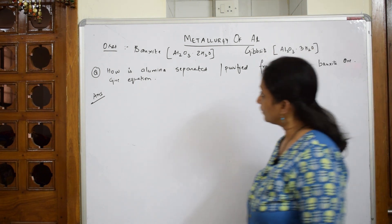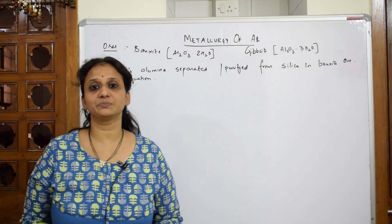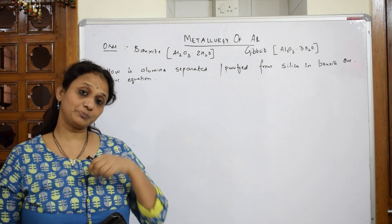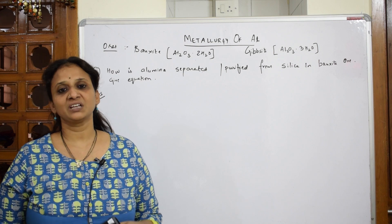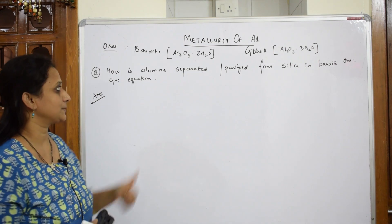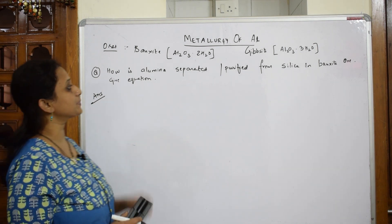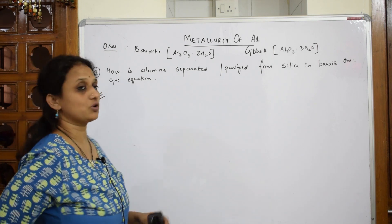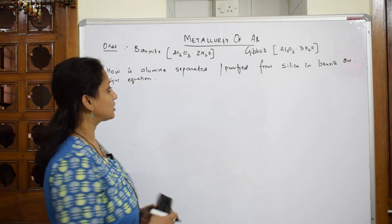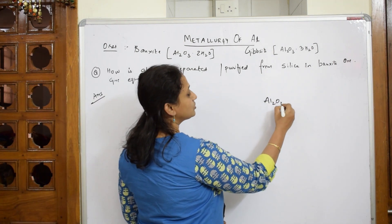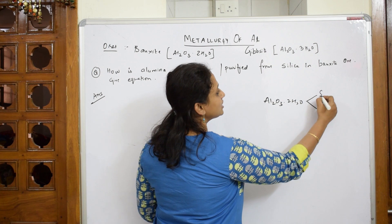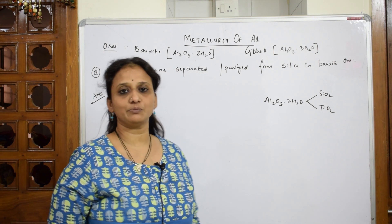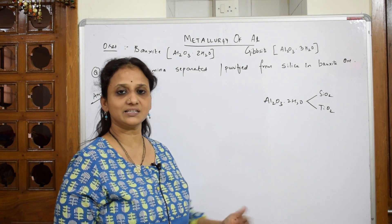We are going to pick up these ores, first separate or purify the metal, and after purification take it for further reduction and refining. Bauxite has two types of impurities: SiO₂ (silica) and TiO₂ (titanium dioxide). Our task is to remove these impurities and then send it for reduction.